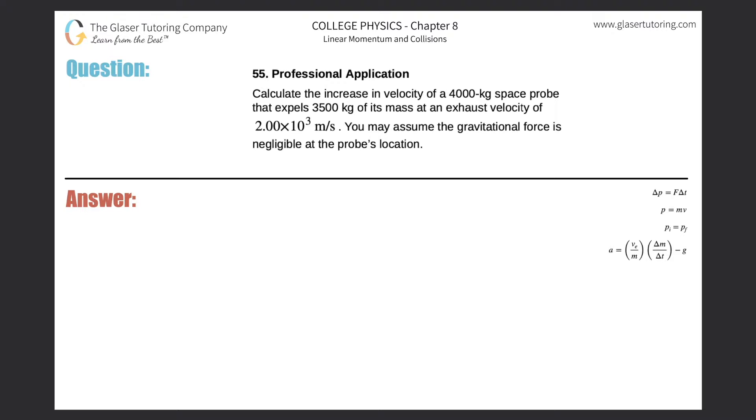Number 55, professional application. Calculate the increase in velocity of a 4,000 kilogram space probe that expels 3,500 kilograms of its mass at an exhaust velocity of 2 times 10 to the 3 meters per second. You may assume the gravitational force is negligible at the probe's location.